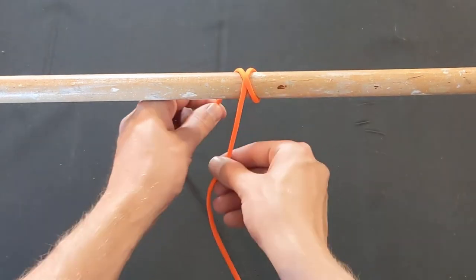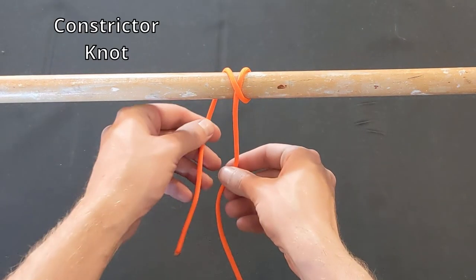Here's where the two knots differ. In the constrictor knot, the line is brought over top of the standing end, and then through the X.